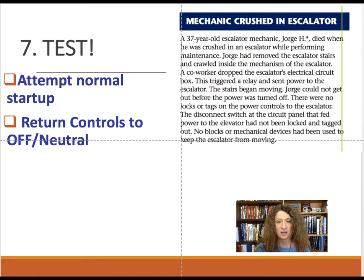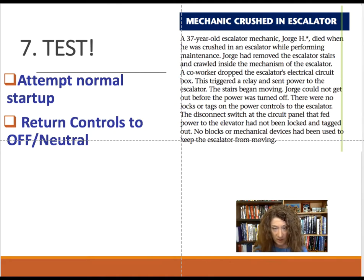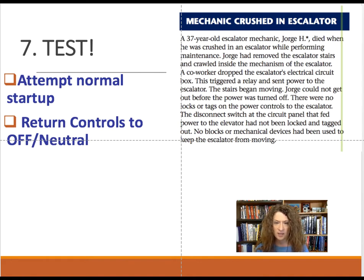Step 7: After lockout-tagout, actually test the equipment — try to turn it back on and see whether the system will energize. Hit the on button a couple of times; if you've isolated all the energy, the system won't turn on. A case study: a 37-year-old escalator mechanic named George was crushed in an escalator while performing maintenance. He had removed the stairs and crawled inside the mechanism. A co-worker dropped the electrical current box, triggering a delay that sent power to the escalator. The stairs began moving and George could not get out. There were no locks or tags on the power controls, and the disconnect switch had not been locked or tagged out.